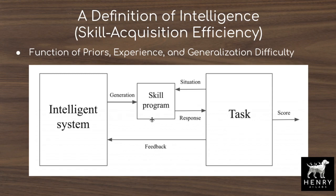The skill program is the product of the intelligence system — the combination of gradient descent, neural network structure, and additional priors. For example, object detection with Faster R-CNN has the prior of first proposing regions of interest and then filtering them. This definition of intelligence says: even if you can learn a task in 10 examples or 10 environment rollouts, if you have a ton of priors, that's not really intelligence compared to something with fewer priors that learns from less experience. Generalization difficulty — the third part of the equation — is tricky to measure, comparing things like classifying a new dog breed versus navigating novel maze layouts in the ProcGen benchmark.